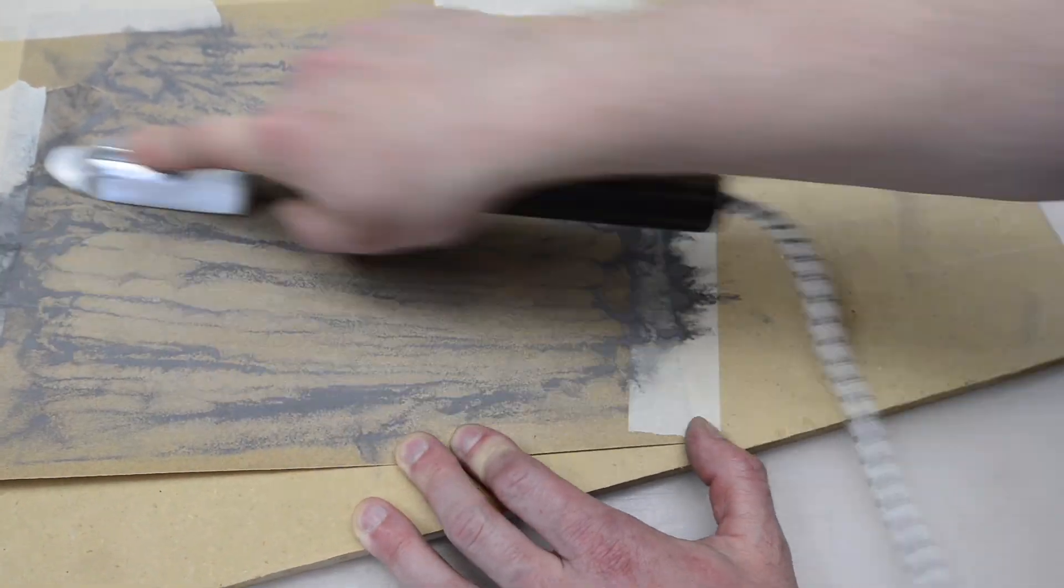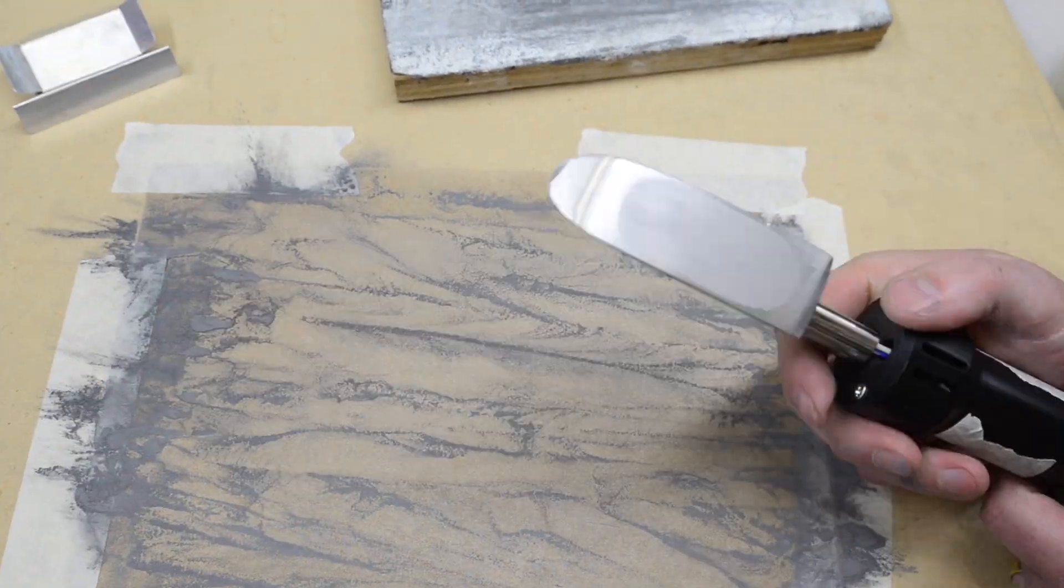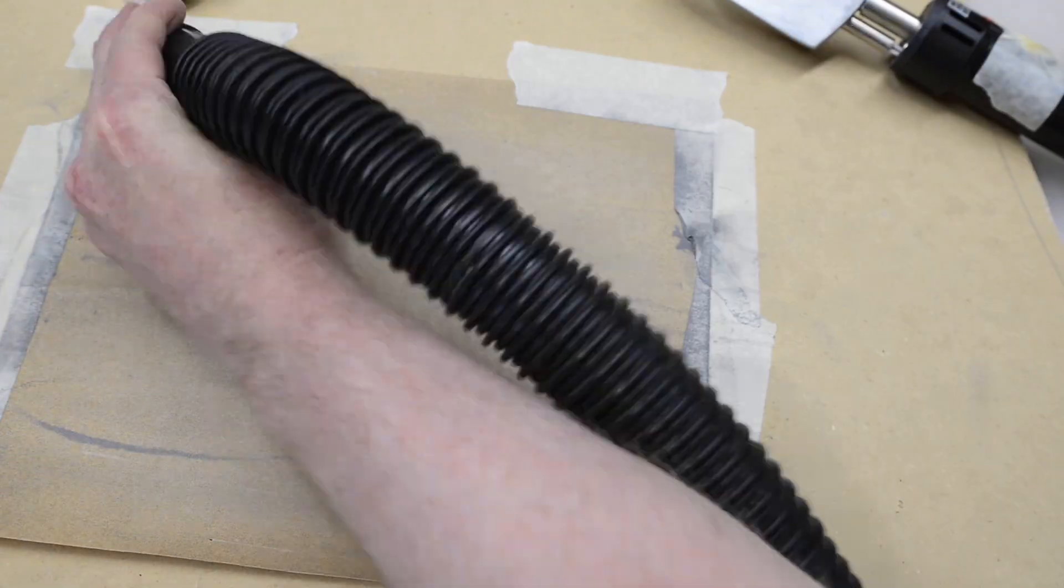I used a couple sheets of cheap 220 grit sandpaper, but emery cloth would probably work better and you could finish it off with a finer grit to make a smoother surface.